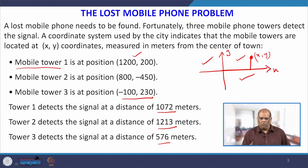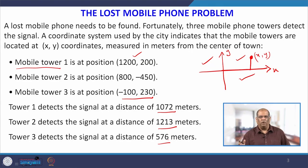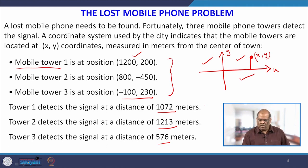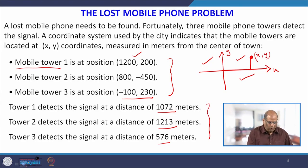So, the problem is that you have lost your mobile phone. The objective is to find an approximate location of that mobile phone. The information available is the position of the mobile towers and the distance of the mobile phone from those towers. With that, we proceed to Step 2.